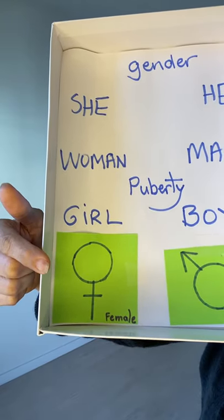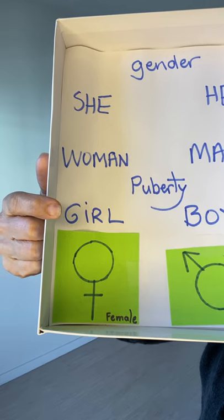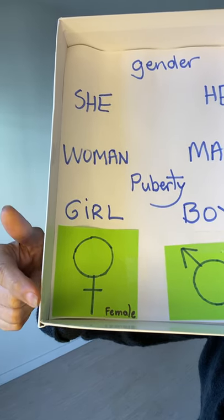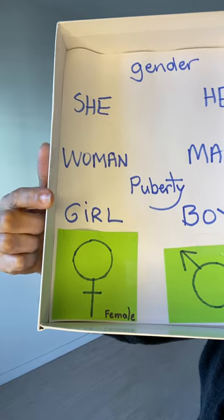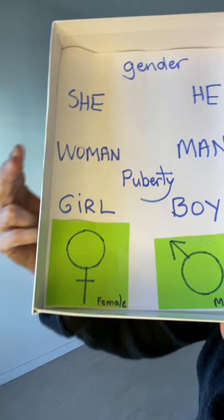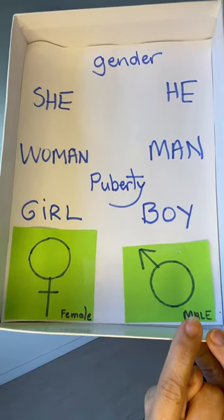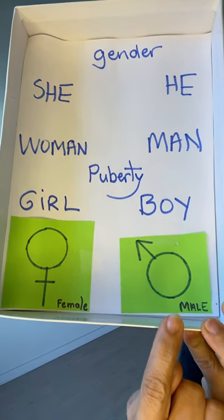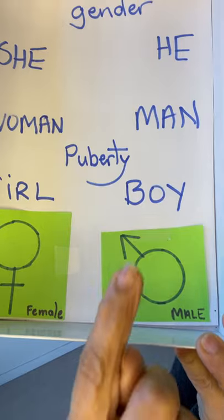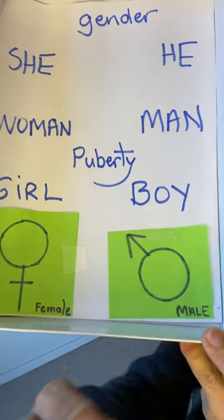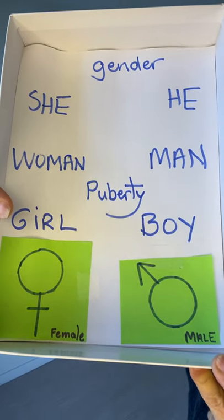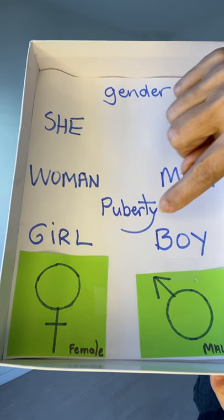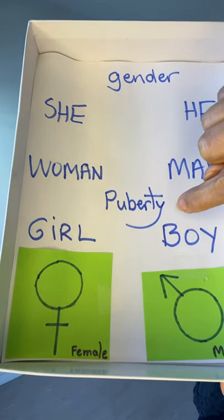A female can also be a girl. A male is also a boy. And then boys and girls go through puberty — puberty.